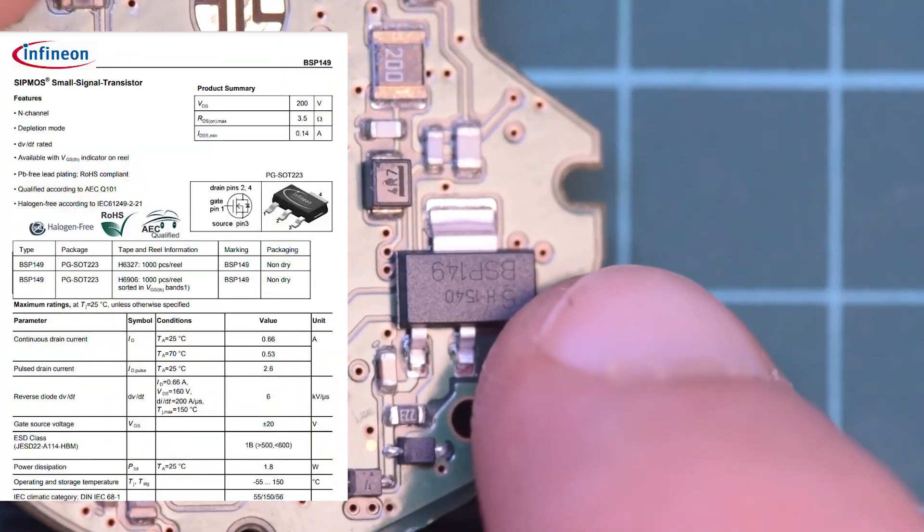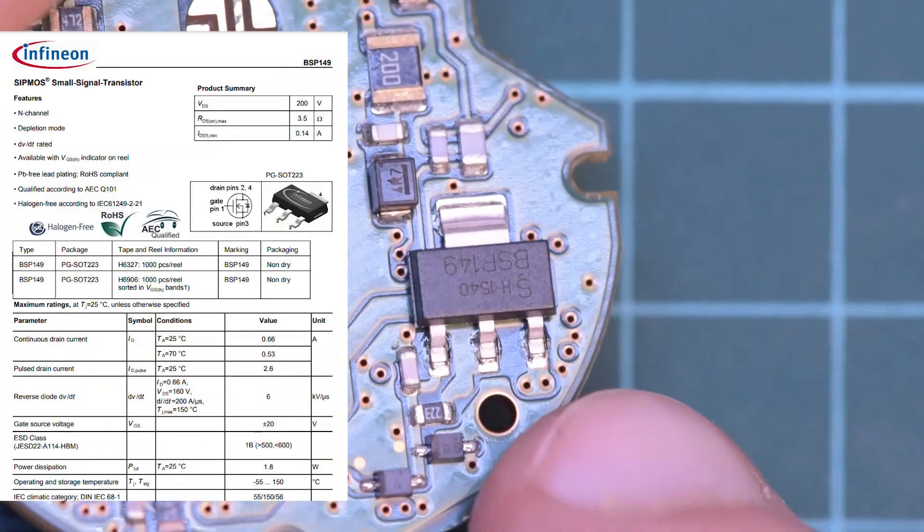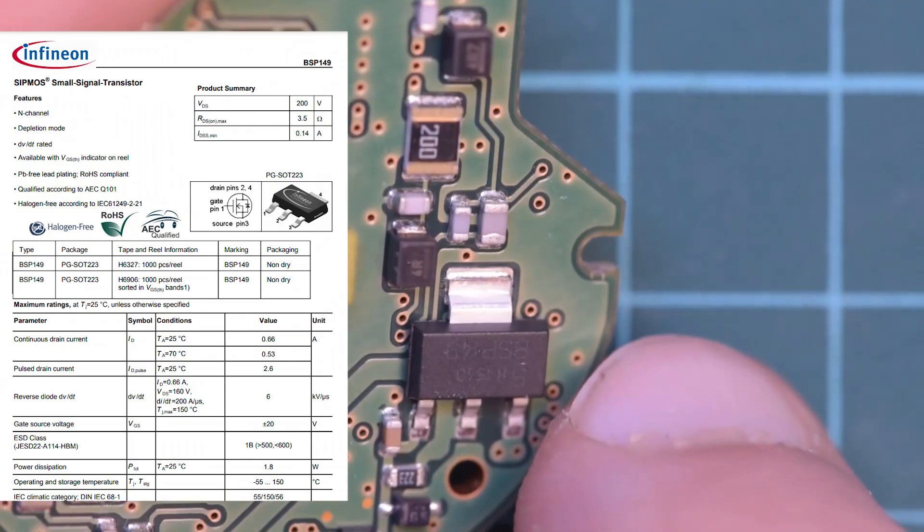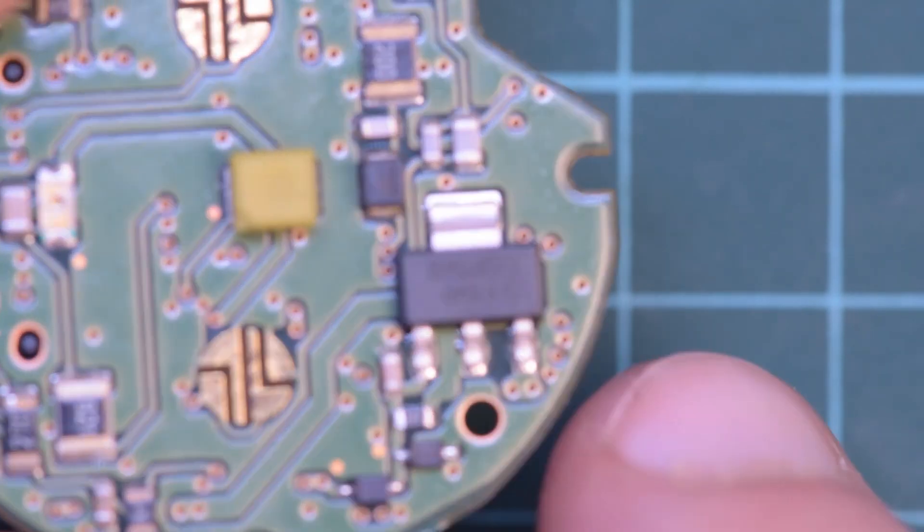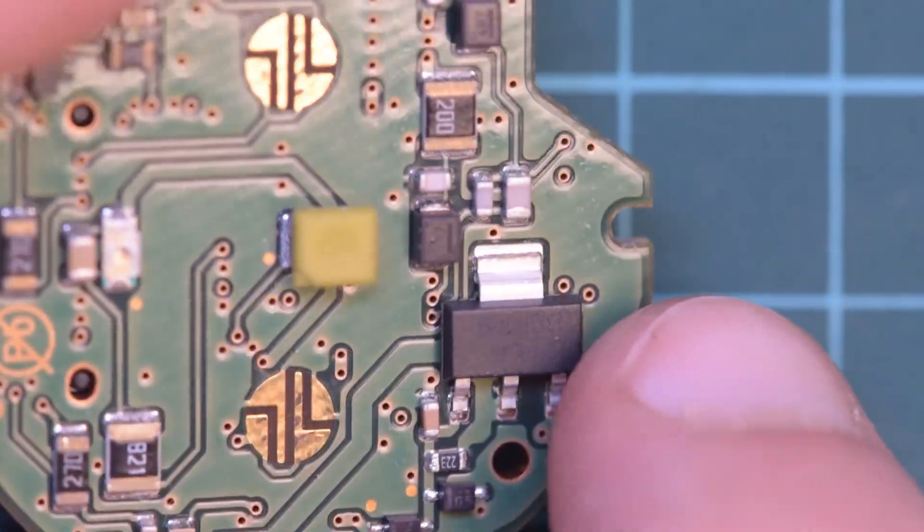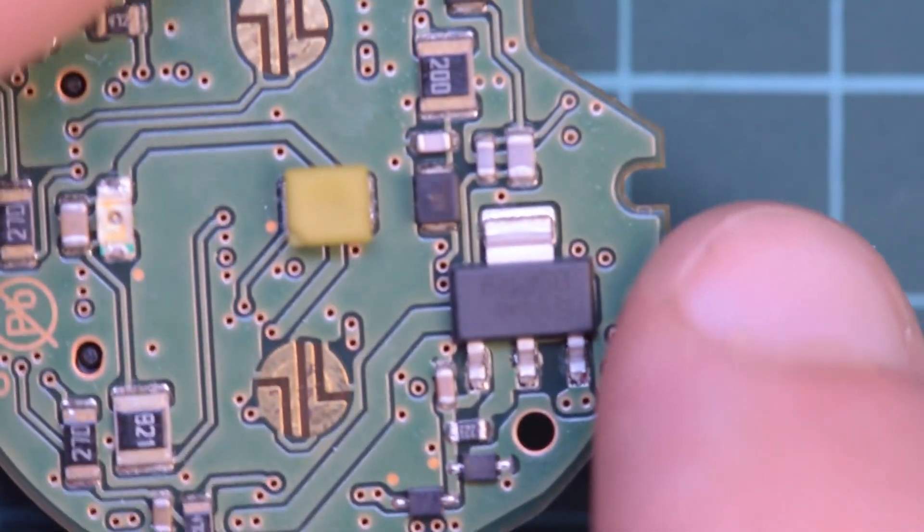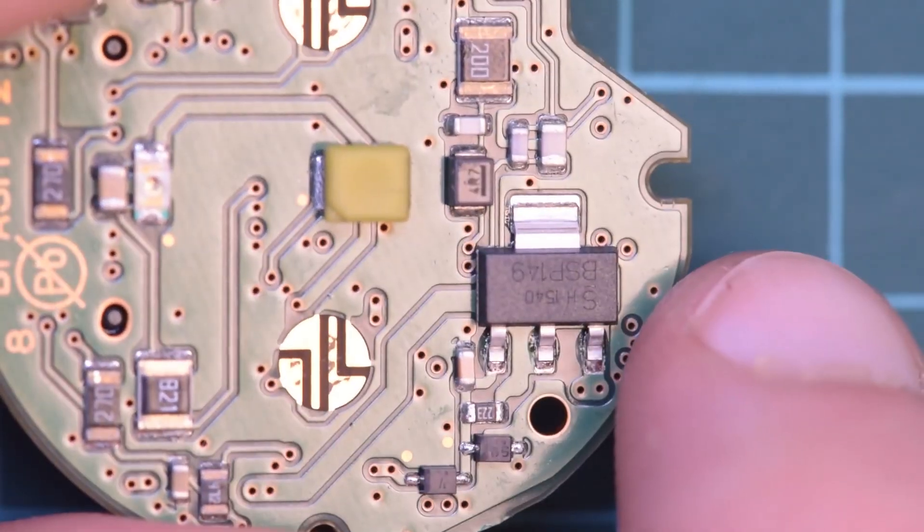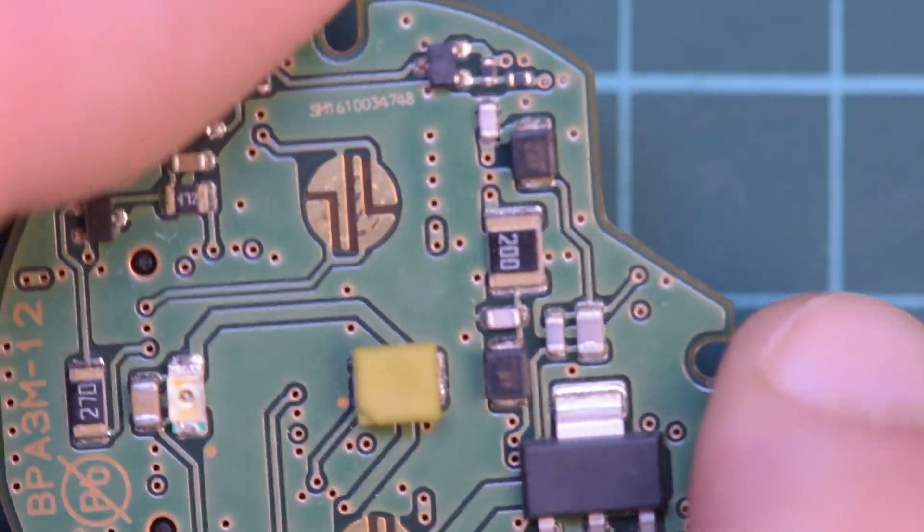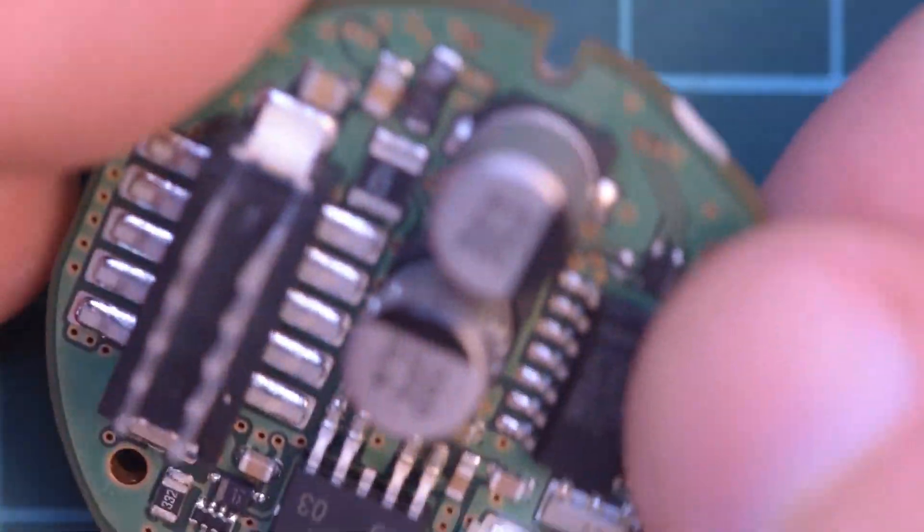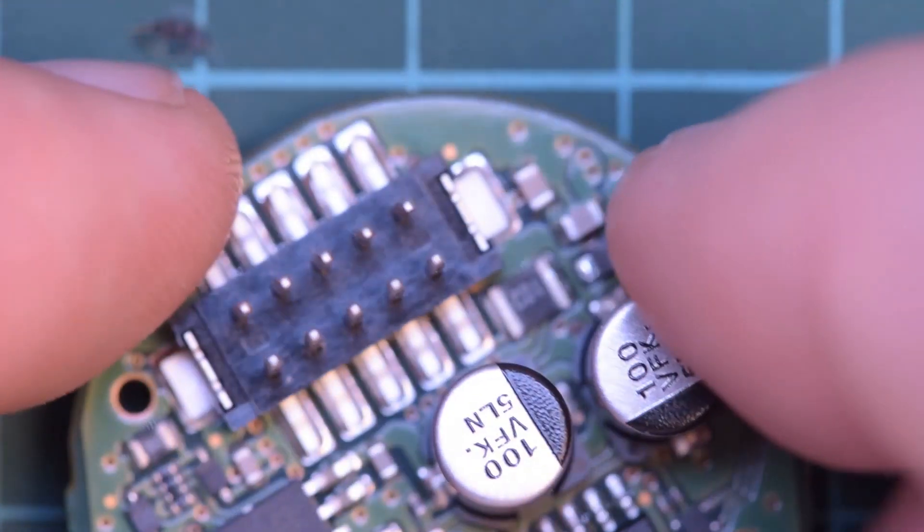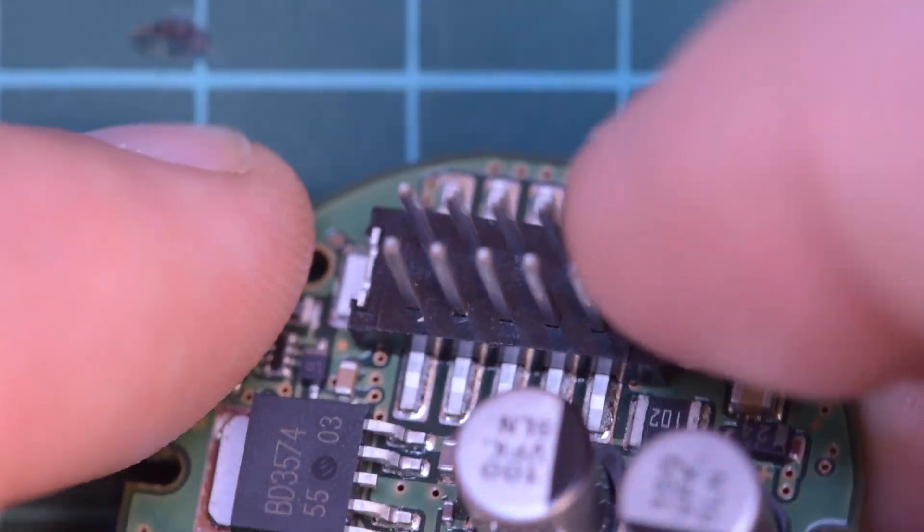So on top of that on this backside here we have a small signal transistor, an NMOS. This is a BSP149 capable of maybe a couple amps at very max. I cannot tell what it's feeding but it might be doing some sort of signaling. I'm not sure. It's fairly big too. It's very chunky. I don't think it runs this LED per se so I'm not sure what that's doing there.